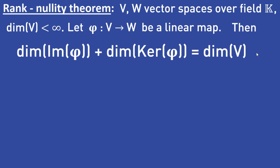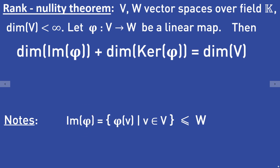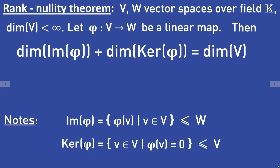I will now explain how the image and the kernel of a linear mapping phi are defined. The image of phi is the set containing all vectors phi(v) where v is an element of V. The image of phi is a linear subspace of W. The kernel of phi is the set of all vectors v in V that satisfy phi(v) = 0. The kernel of phi is a linear subspace of V.